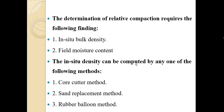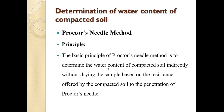To determine the relative compaction or the effect of compaction in the field, we have to find out the in-situ bulk density and field moisture content. The in-situ density can be computed by methods such as the core cutter method, sand replacement method, or rubber balloon method. For water content of compacted soil, the usual laboratory method is oven drying, but the 24-hour oven drying method is lengthy and cannot be used in the field.